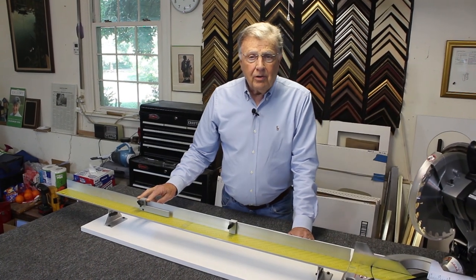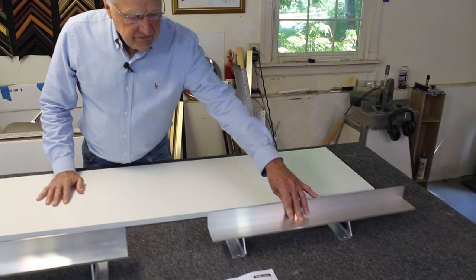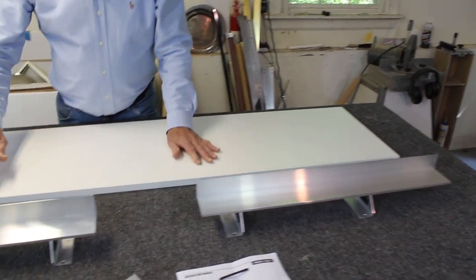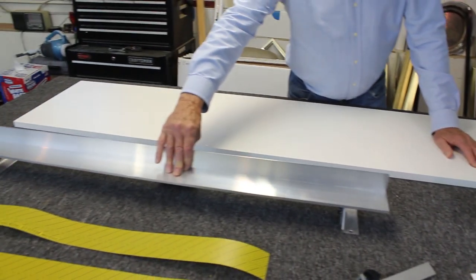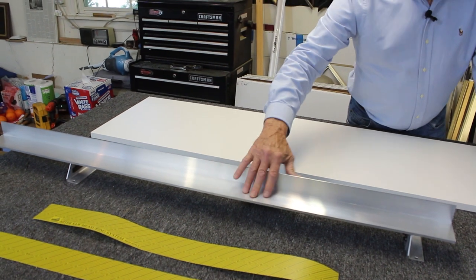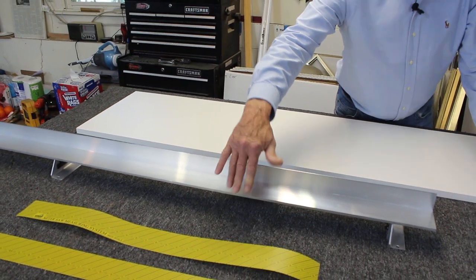And now we're going to assemble the Logan Saw Fence Kit. Here are the components that come with your kit. There is the right hand fence and of course the left hand fence. This is the one that will get the scales in just a few moments. Let's go over the other pieces.